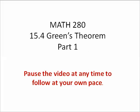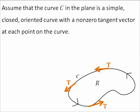Green's Theorem Part 1. Assume that the curve C in the plane is a simple closed oriented curve with a non-zero tangent vector at each point on the curve.